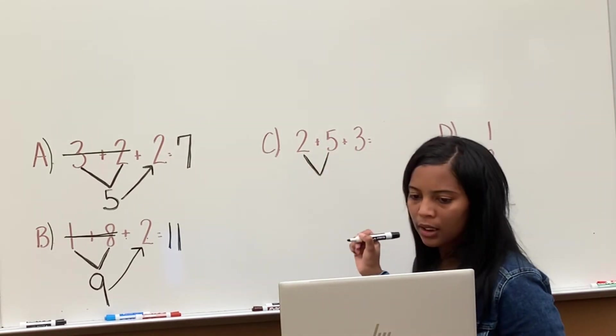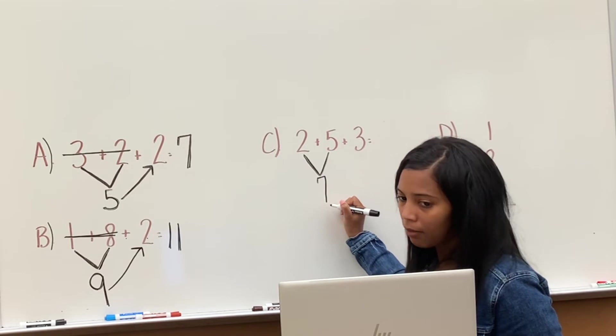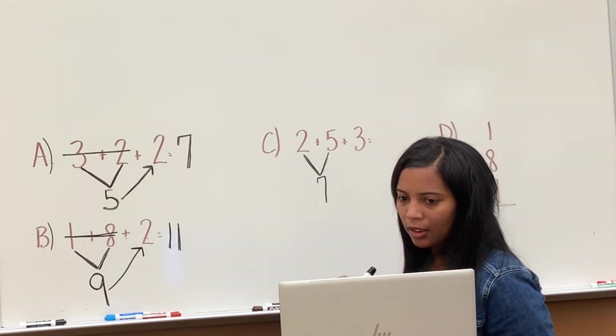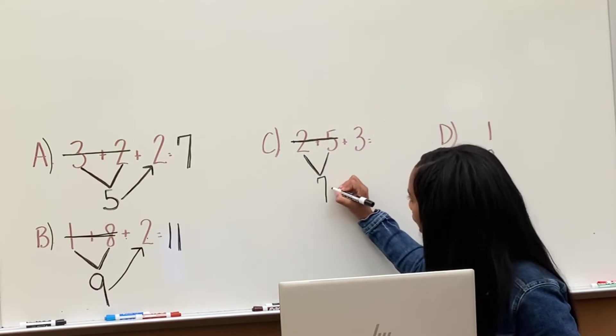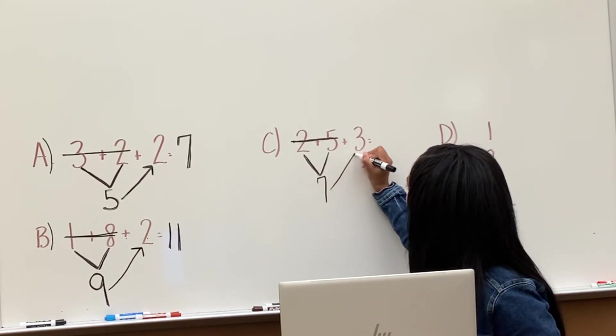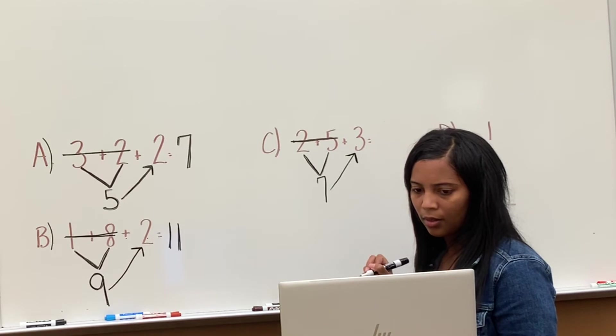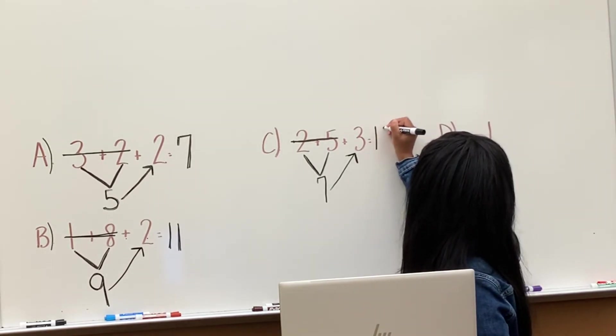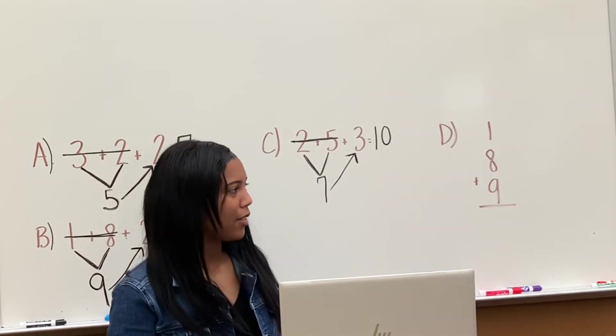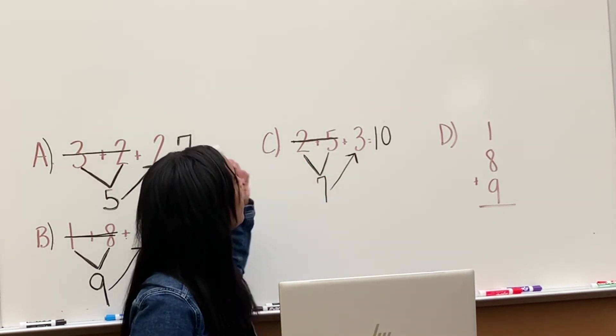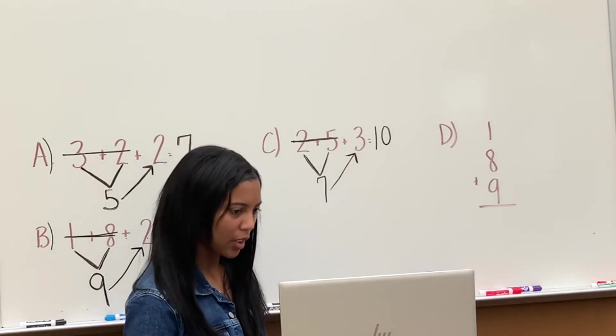2 plus 5. So let's connect 2 plus 5. And what does 2 plus 5 equal? 7. Good. And what do I do after I write 7? You connect the 7 to the 3. Before that. You cross. Yes. Cross out 2 and 5 because I added those. So now, like Amina said, I connect 7 plus 3. And that equals 10. 7 plus 3 equals 10. So we add 2 plus 5 first. That equals 7. Then we do 7 plus 3 equals 10.